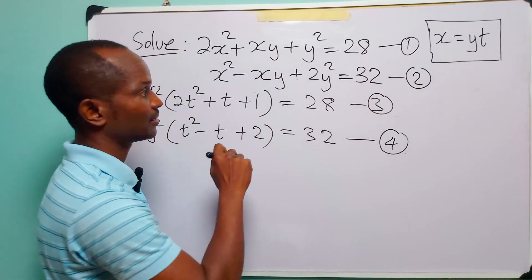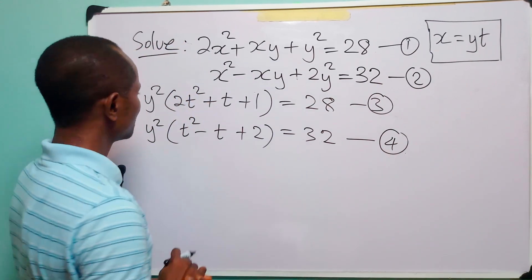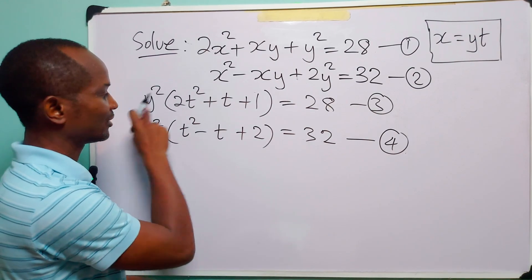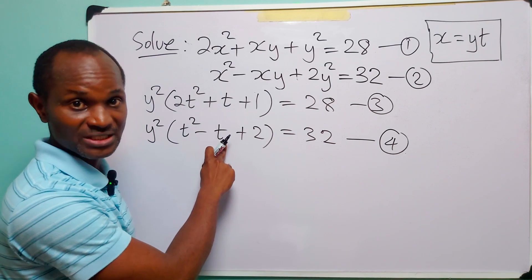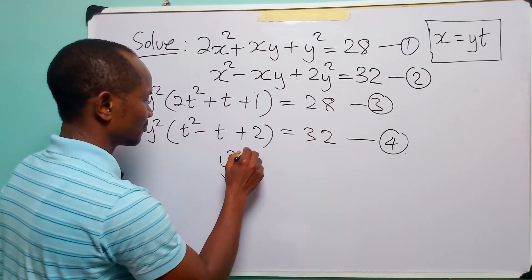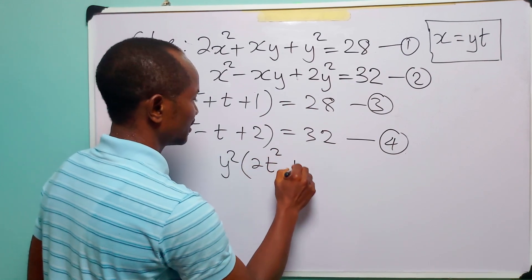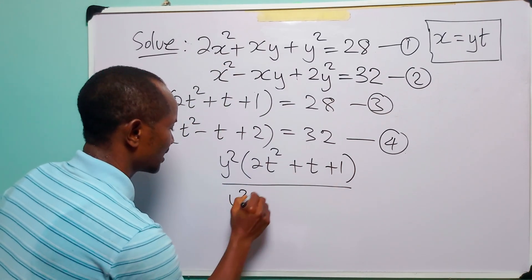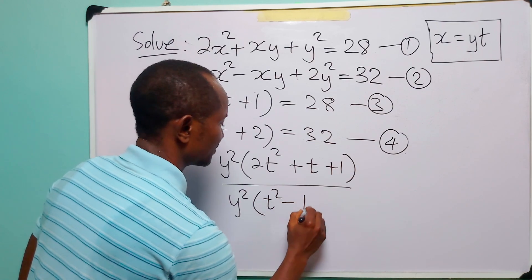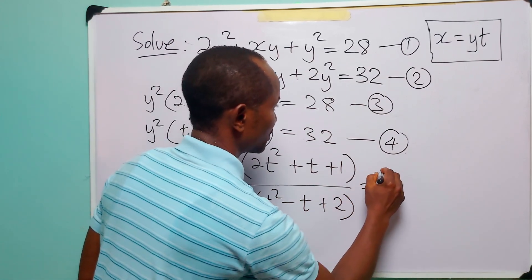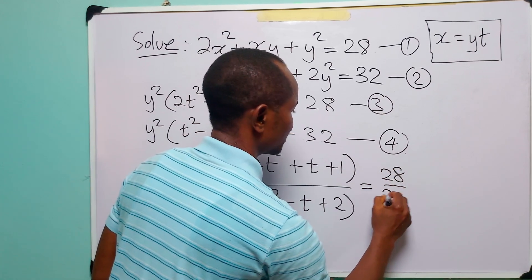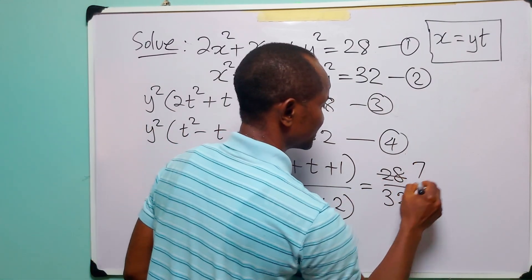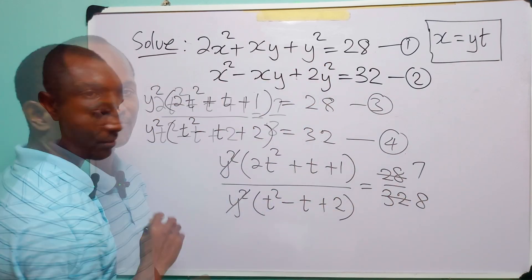With the substitution x = yt, we have changed equation 1 into equation 3 and equation 2 into equation 4. Now notice that if we divide equation 3 by equation 4, we will be able to get rid of y² and solve the resulting equation for values of t. So we have y² times (2t² + t + 1) divided by y² times (t² - t + 2) is equal to 28 over 32. Cancelling y², and simplifying 28/32 gives 7/8.